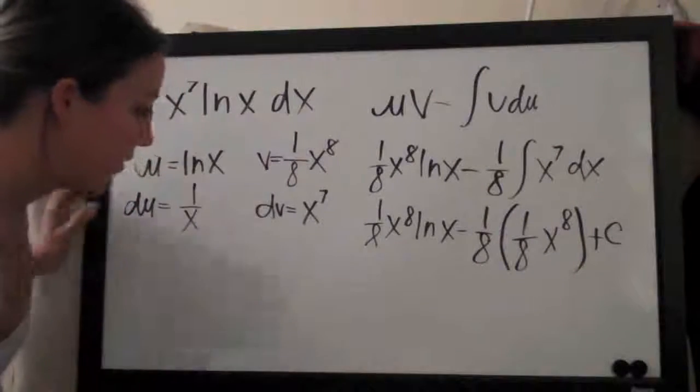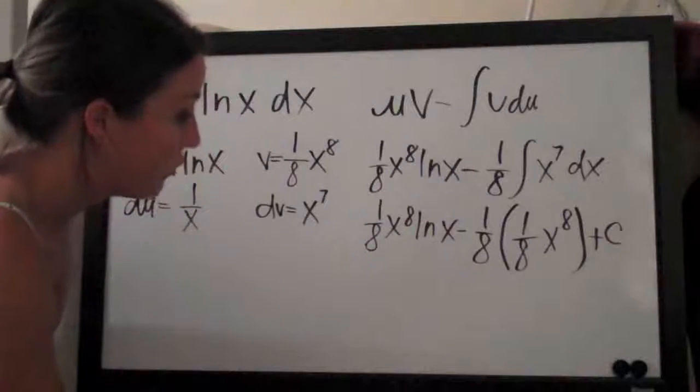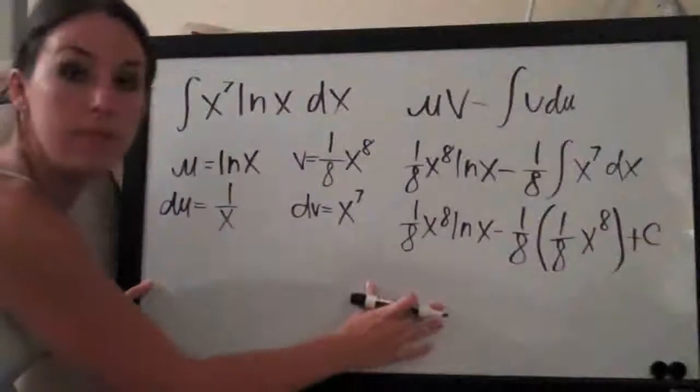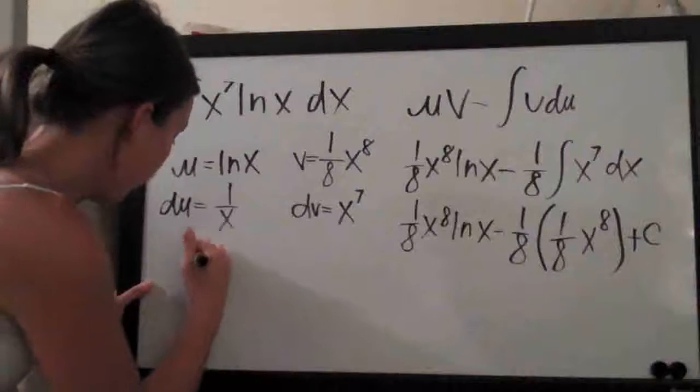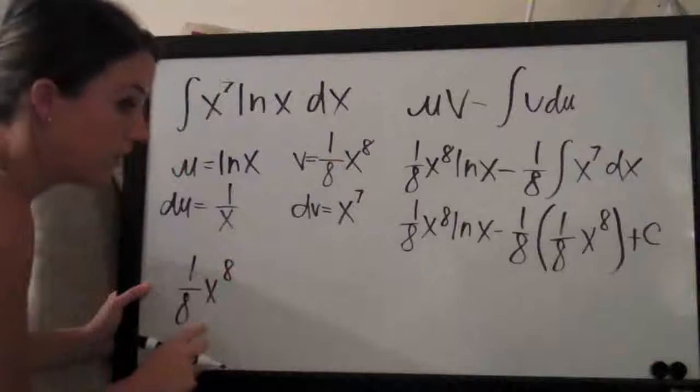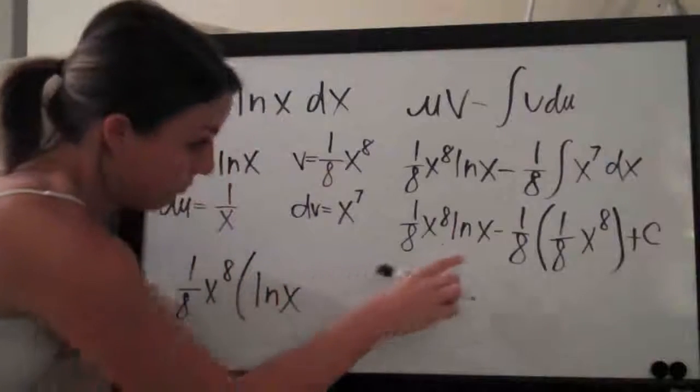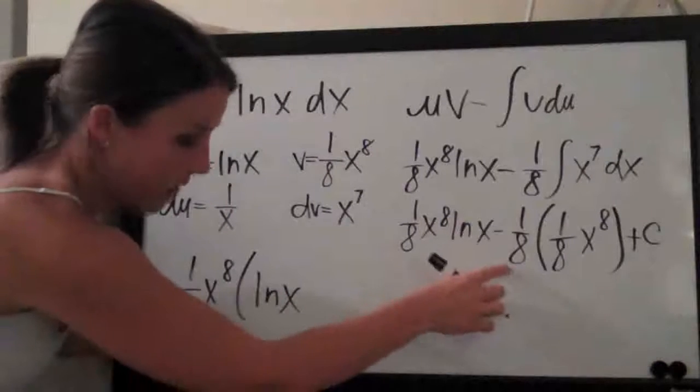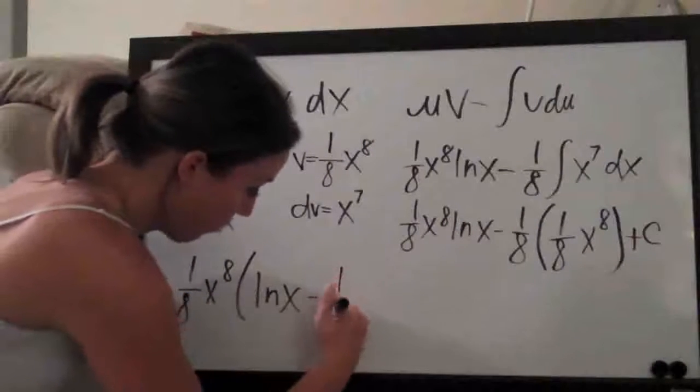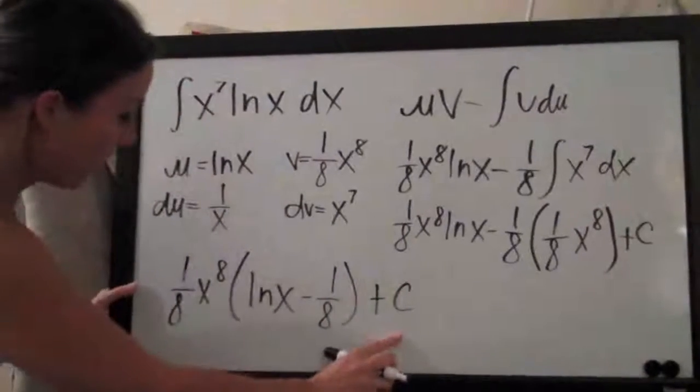What I'm going to do is factor out one eighth x to the eighth because I think that will be the cleanest answer. So I'll factor out one eighth x to the eighth and then I will multiply that by ln of x in the first term, and then all we have left in the second term is one eighth so it will just be minus one eighth plus c and that is our final answer.